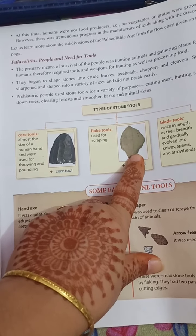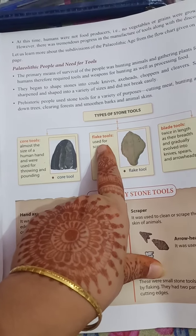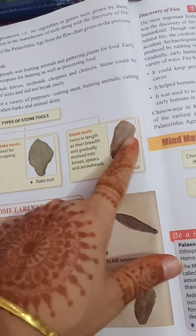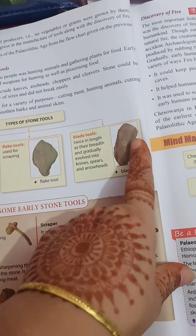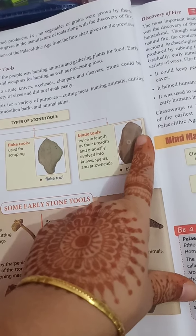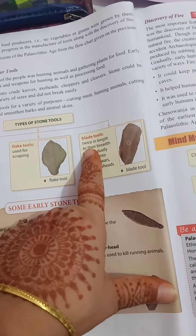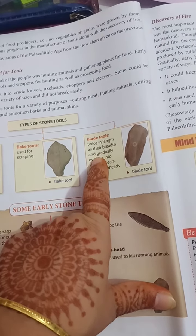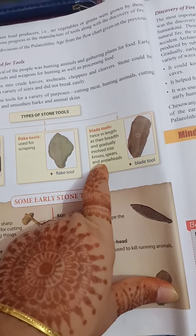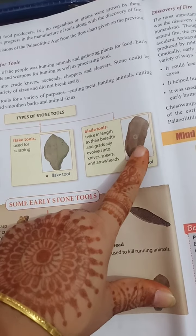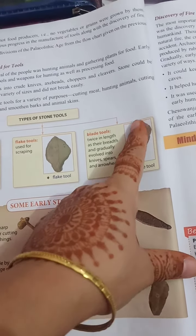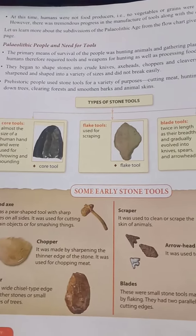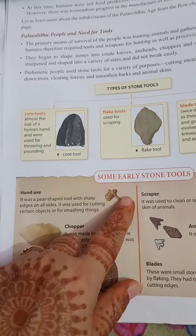Next is flake tools. Flake tools can be held properly from one end, and the other end is pointed. They were used for scraping. Next is blade tools — like a blade, they are very sharp from the edges. Blade tools were twice in length as their breadth, and gradually evolved into knives, spears, and arrowheads.